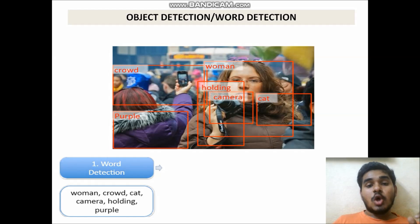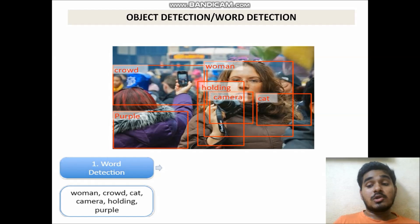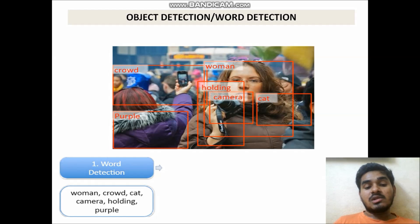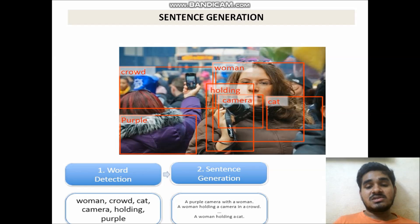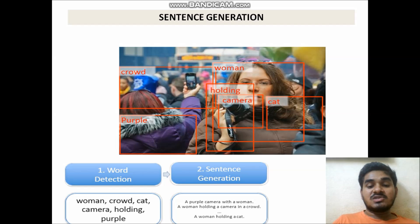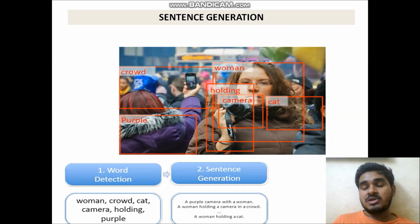In the first phase — object detection — the objects in the images are detected. Looking at this picture, there are many objects: a crowd, a camera, a woman. These are all the visible objects from the image. The second step is sentence generation. By looking at that image you might think 'a purple camera with a woman' is one caption, and 'a woman holding a camera in the crowd' is another caption.